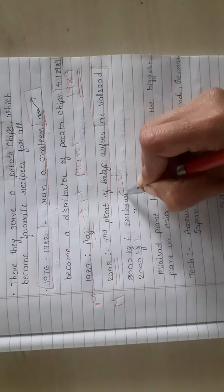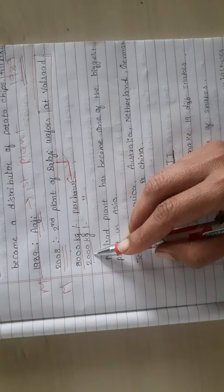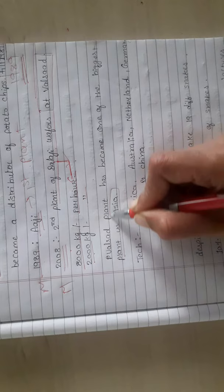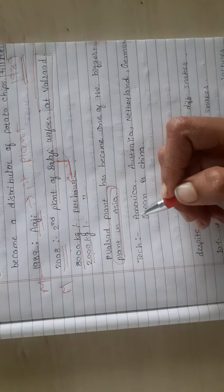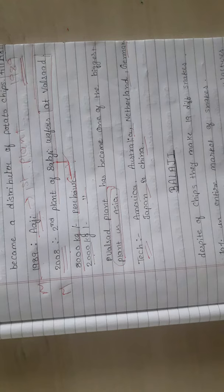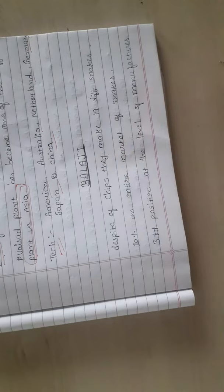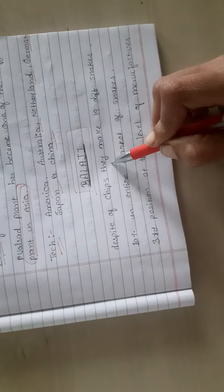The plant produces 8,000 kilos of wafers per hour, while the second plant in Valsad produces 2,000 kilos per hour. The Valsad plant is the biggest wafer plant in Asia. The technology was brought from America, Australia, Netherlands, and China.